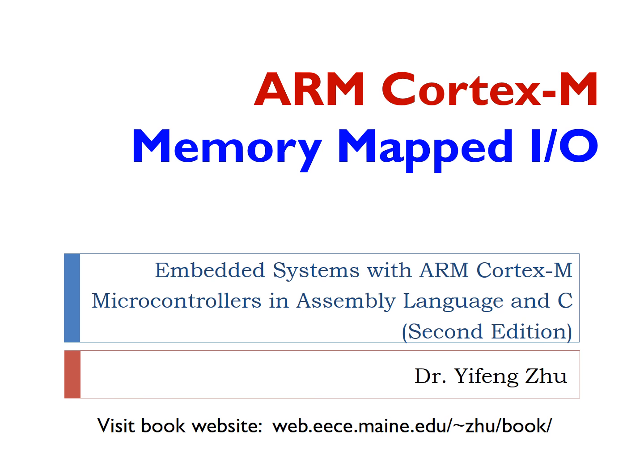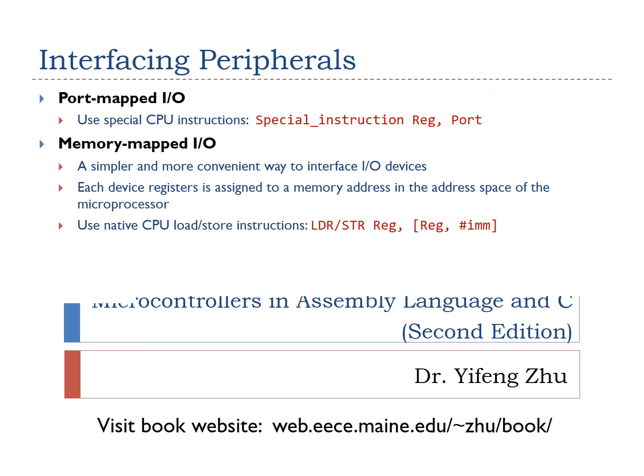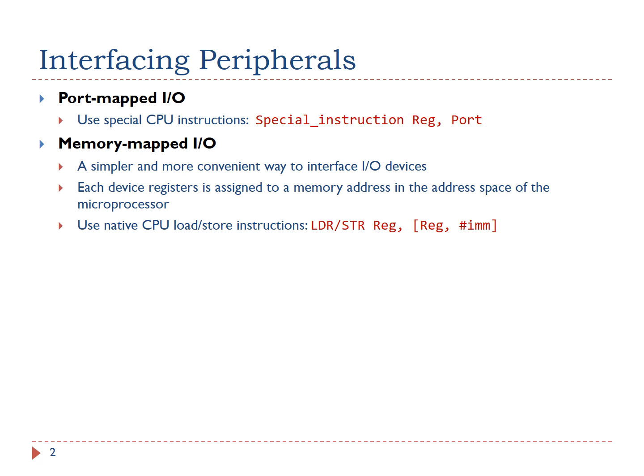This short video explains what is Memory Mapped I/O. Usually, each on-chip peripheral device has a few registers, such as control registers, status registers, data input registers, and data output registers.